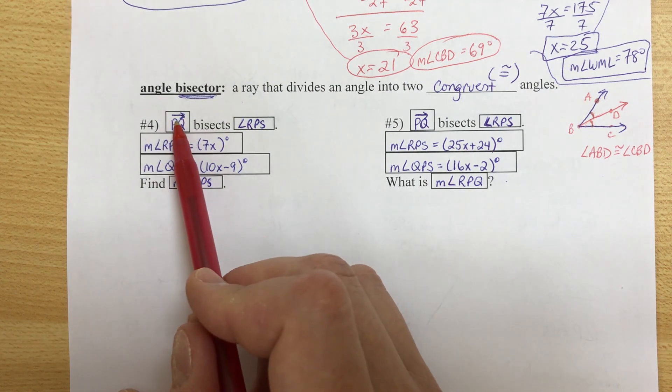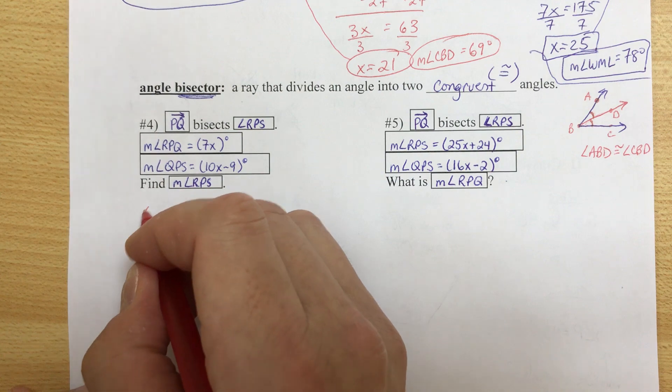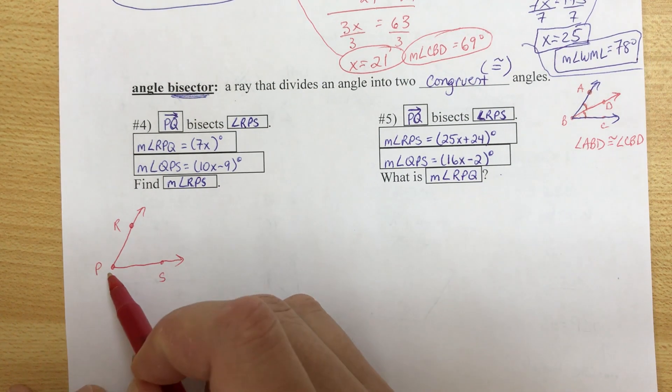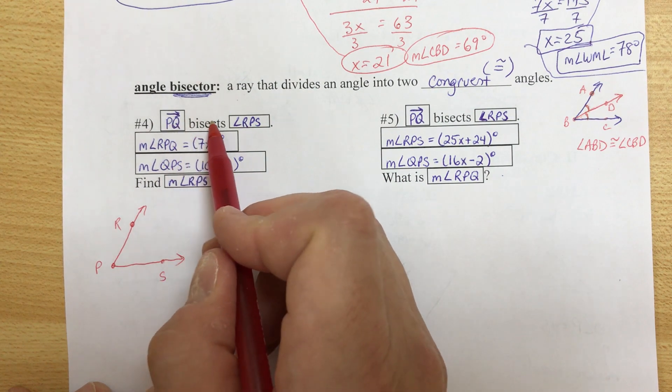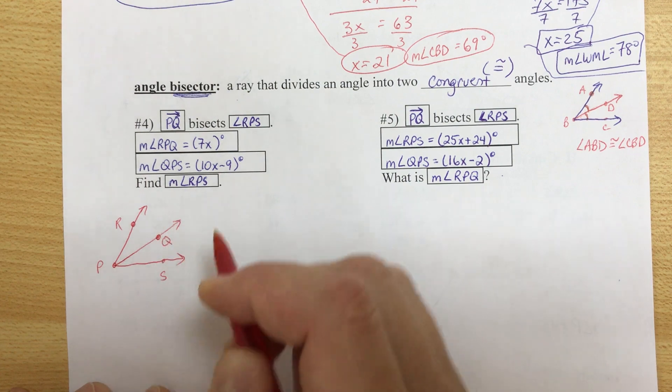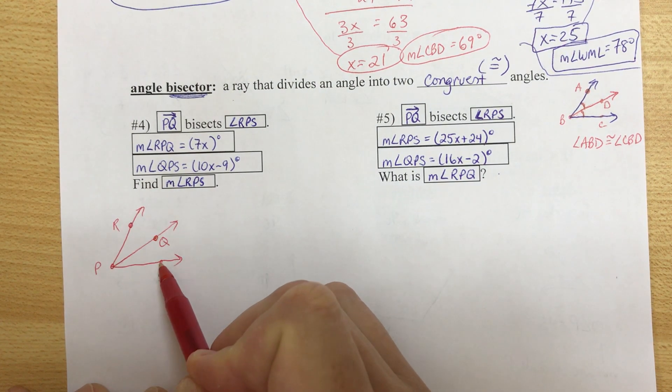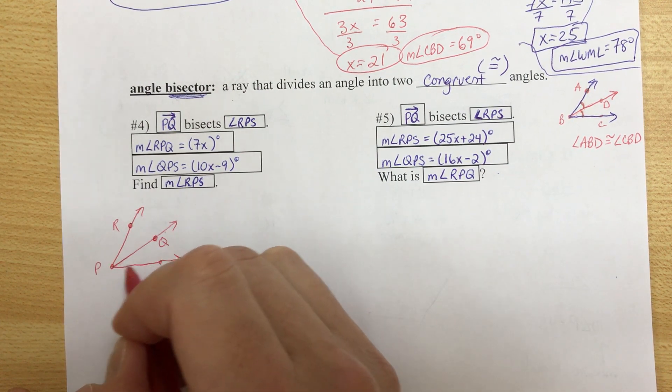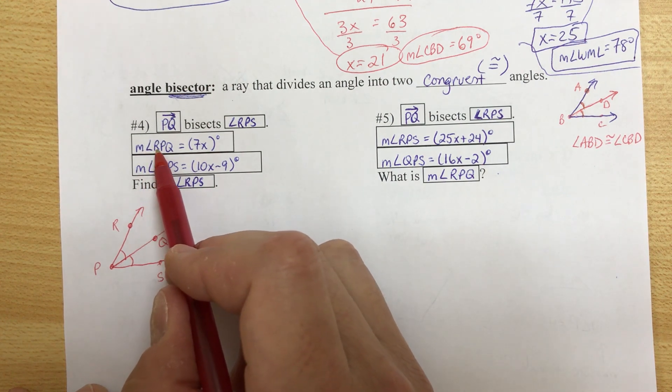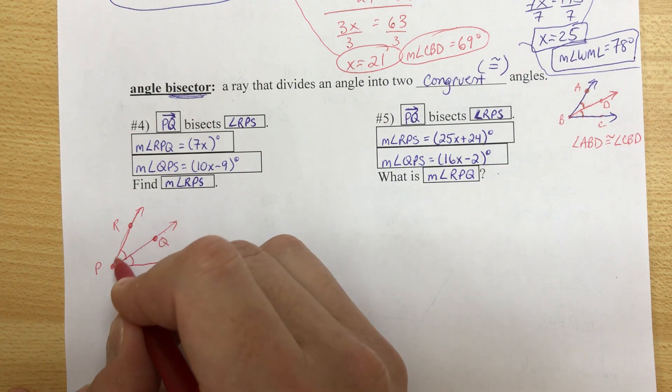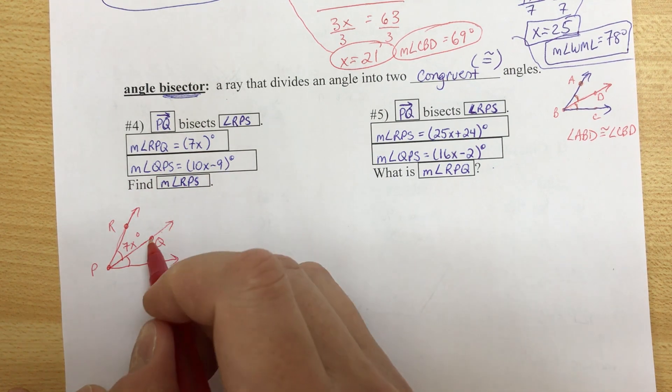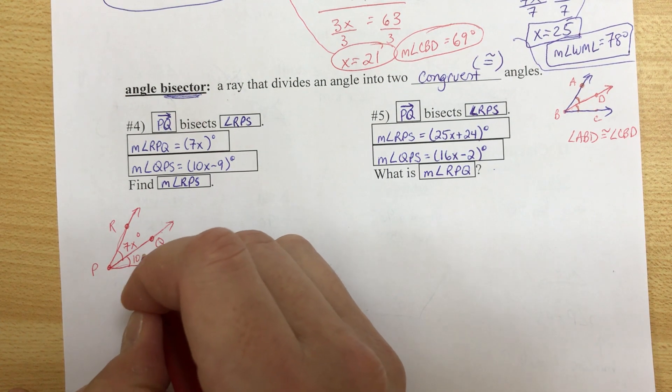So problem number four, ray PQ bisects angle RPS. I'm going to stop right there, and I'm going to draw this. So the angle is RPS. P is the vertex because it's the middle letter. Ray PQ bisects that. So from P, I'm going to draw another ray. I'm going to put point Q on there. Notice I actually put points. I don't label the arrows. I label points. So if ray PQ bisects angle RPS, then we know this and this have to be congruent. They're equal. Okay, let's label measure of angle RPQ equals 7x degrees. RPQ is 7x degrees. Measure of angle QPS is 10x minus 9 degrees. QPS, that's this lower one, that is 10x minus 9 degrees.